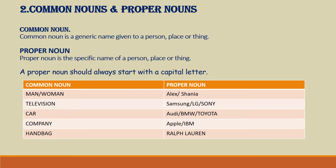Common nouns and proper nouns. Common noun is a generic name given to a person, place or thing. Proper noun is a specific name of a person, place or thing. A proper noun should always start with a capital letter.